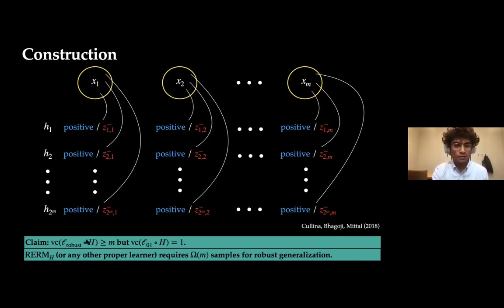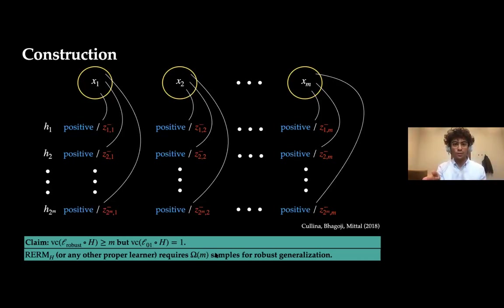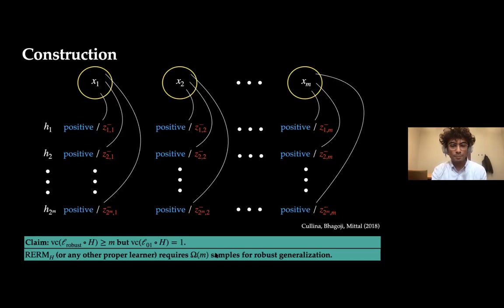A similar construction appeared independently in work by Colina, Bagucci, and Mittal. Once we show there can be arbitrarily large gaps between the VC dimension of the robust loss and the VC dimension of the standard loss, we can prove that robust ERM needs at least M samples for robust generalization. If you show robust ERM just half the data points, it can give you back a predictor that is perfectly robust on those points but non-robust everywhere else. A similar modification fools any proper learning algorithm, showing proper algorithms need at least M points to do robust generalization. Since M was arbitrary, this shows robust learnability is not guaranteed using any proper learning algorithm.